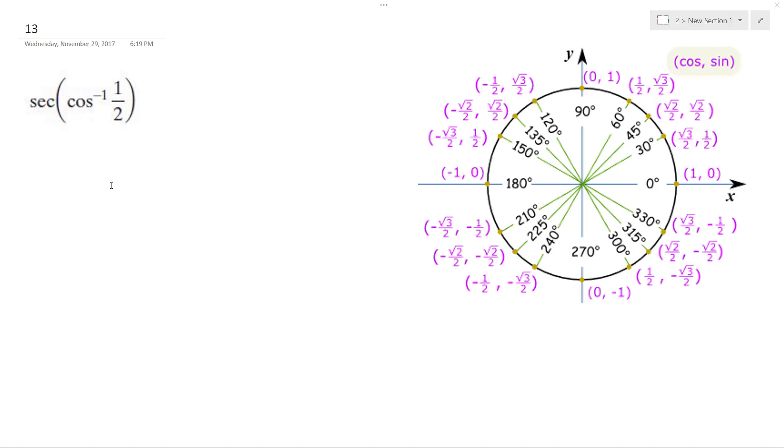Alright, so I want to find the secant of the inverse cosine of one-half. So cosine is bound between zero and pi.